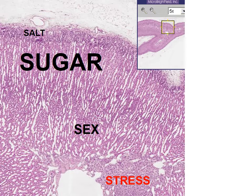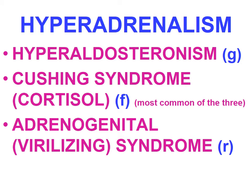As you go deeper it gets more sweet. Hyperadrenalism is a syndrome related to overproduction of one or more of the three basic adrenal cortical steroids. These include hyperaldosteronism due to excessive mineralocorticoids, Cushing syndrome due to excessive secretion of cortisol — the most common of the three — and adrenogenital syndrome due to excessive secretion of androgens and estrogens from zona reticularis.